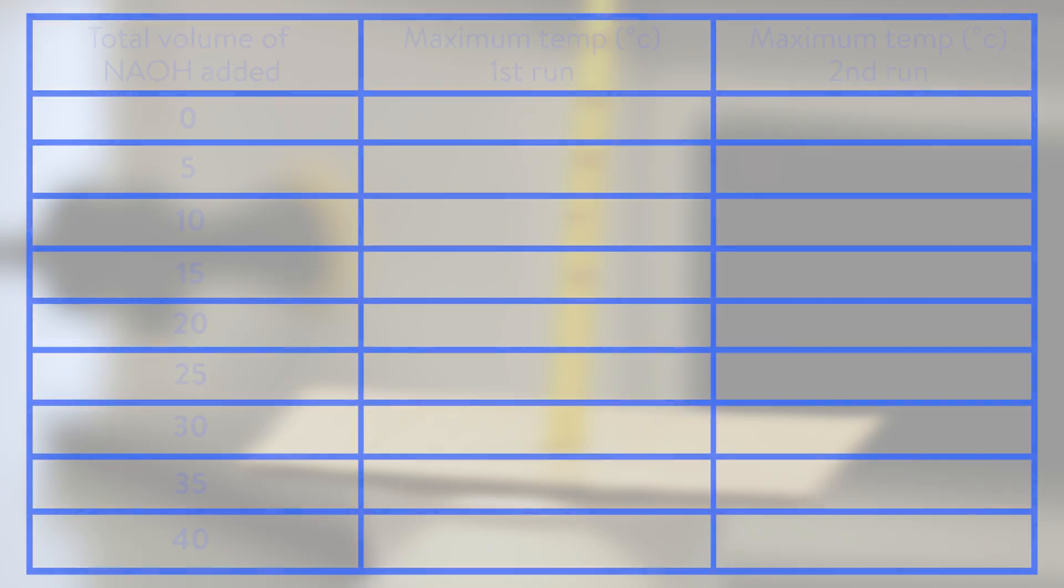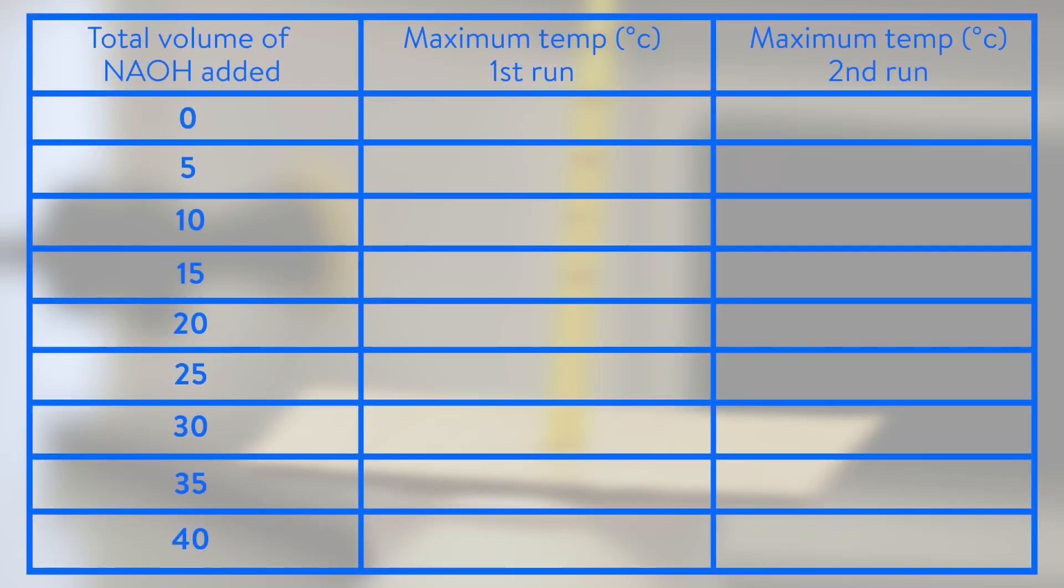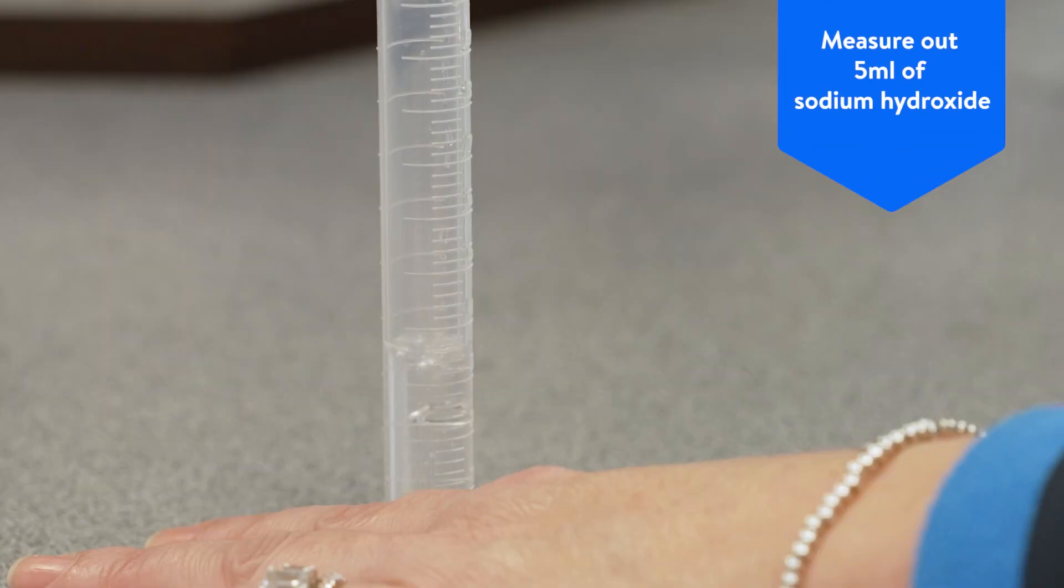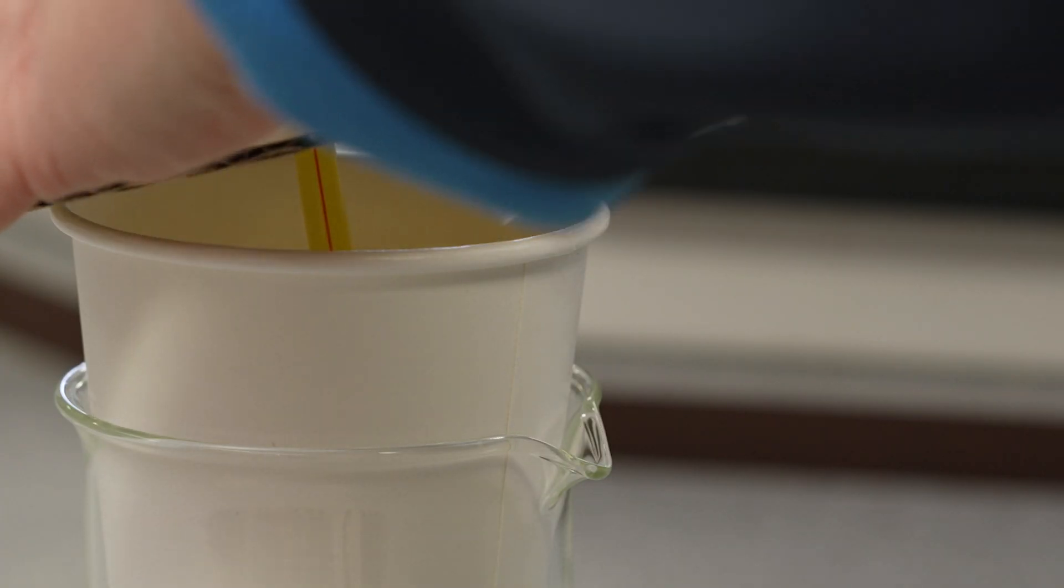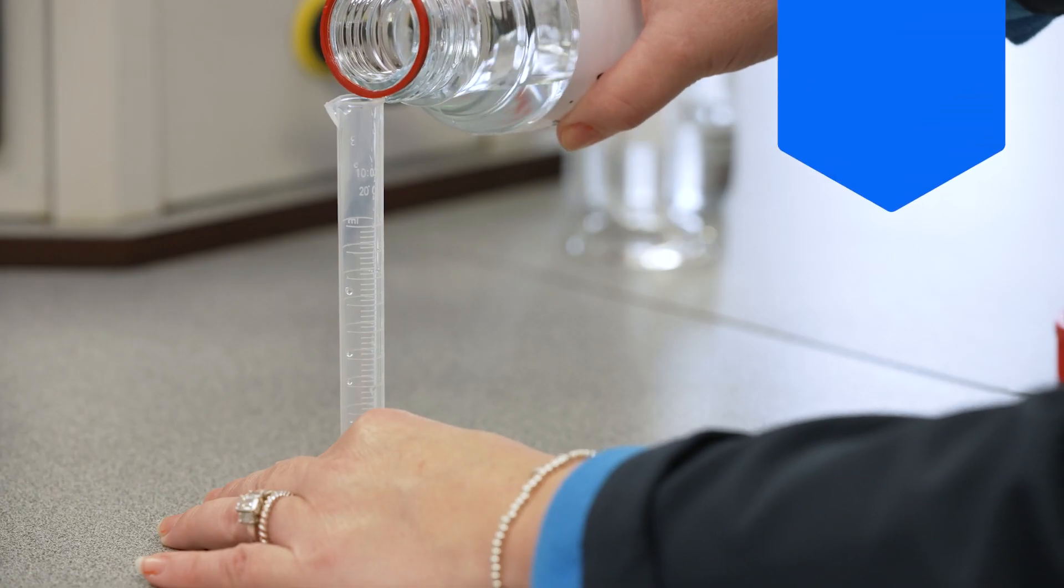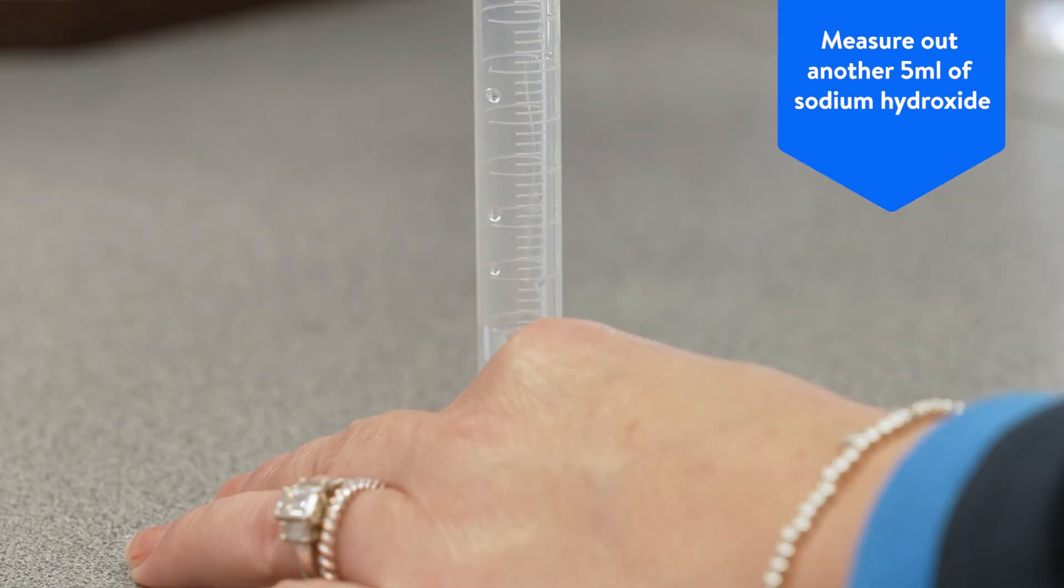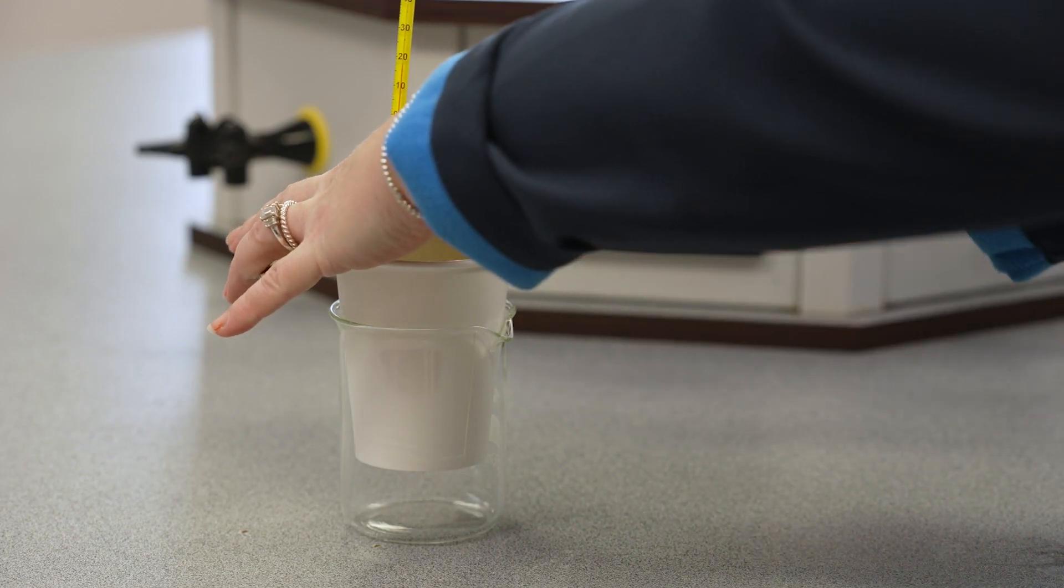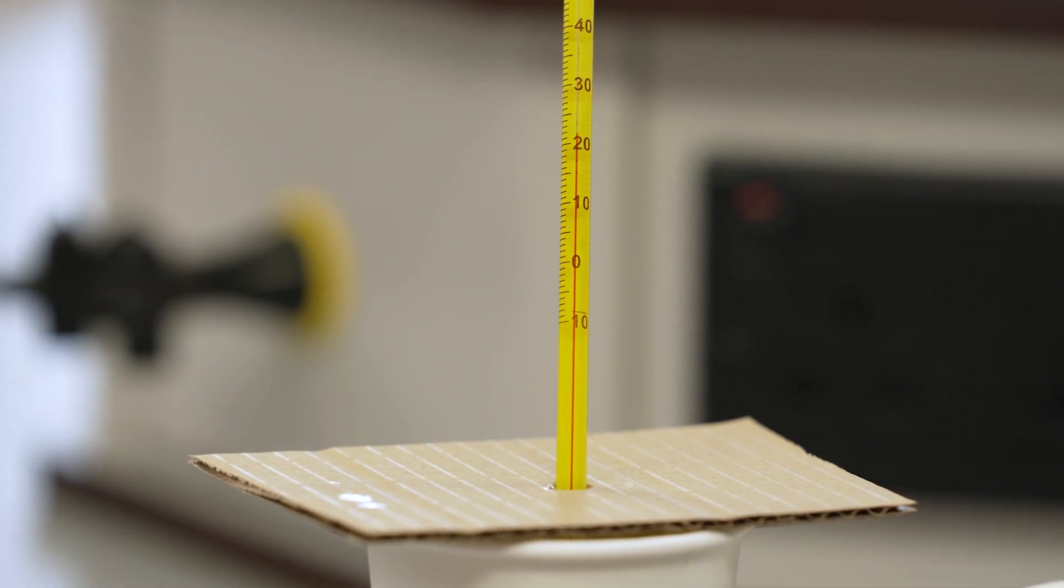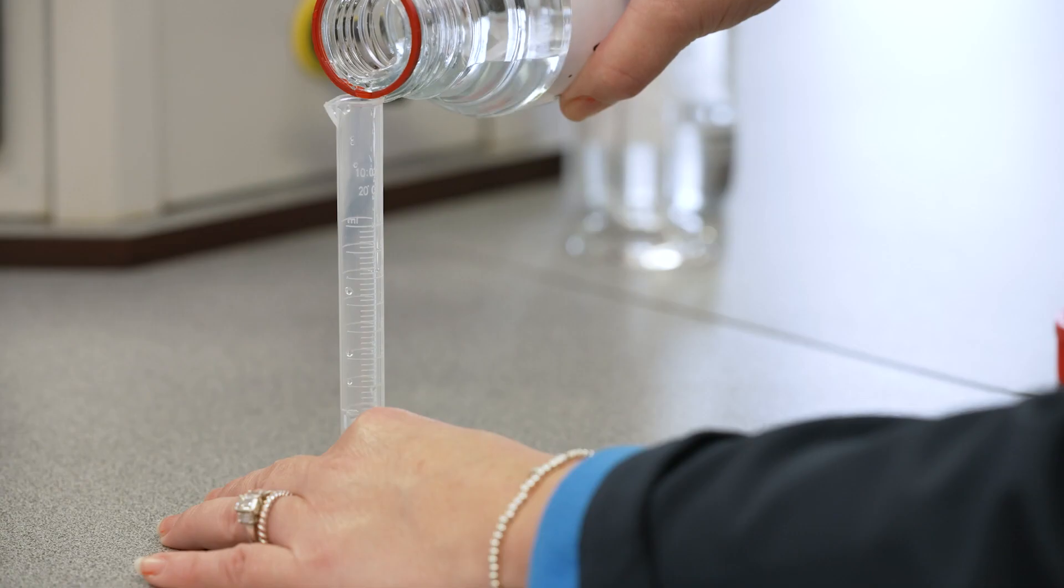Carefully measure five milliliters of sodium hydroxide into the measuring cylinder, pour this into the cup and replace the lid and stir with the thermometer. Watch the thermometer and watch how the temperature changes until the temperature has stabilized.